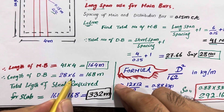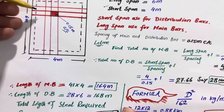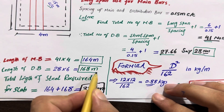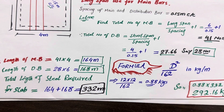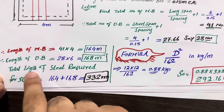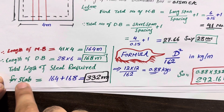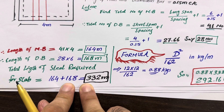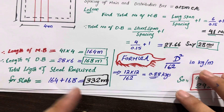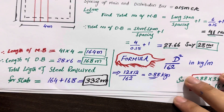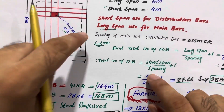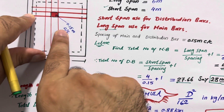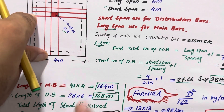Next, the length of distribution bars: we require 28 distribution bars and each length is 6 meter, so we require 168 meter for distribution bars. Now the total length of steel required for the RCC slab is main bars plus distribution bars: 164 meter plus 168 meter equals 332 meter total steel length, with spacing of 0.15 by 0.15 meter center to center.